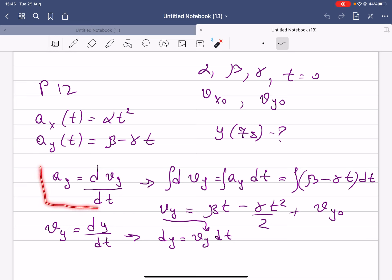First, we know that ay is equal to dvy divided by dt, and from there if we want to find dvy, it equals ay times dt.